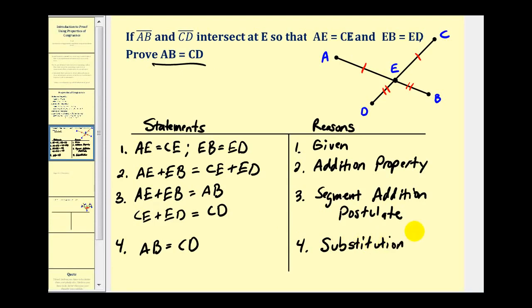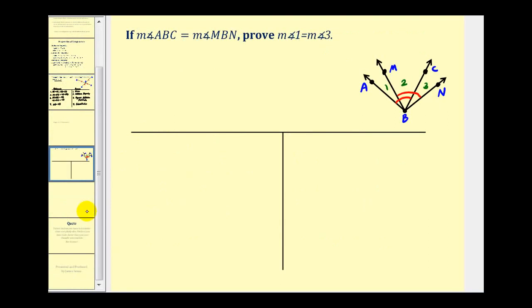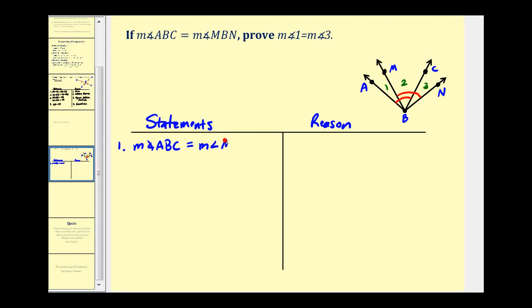Let's take a look at another example that involves angles. Here we're given that the measure of angle ABC is equal to the measure of angle MBN. We want to prove that the measure of angle one is equal to the measure of angle three. So again, we'll have our statements on the left and our reasons on the right, starting with the given information.